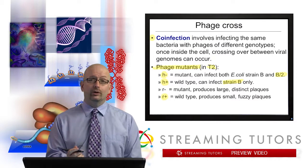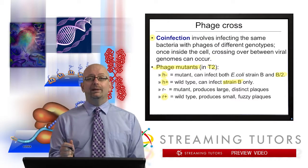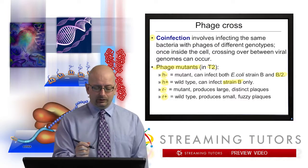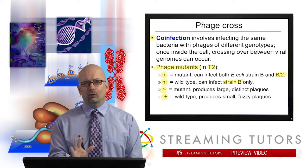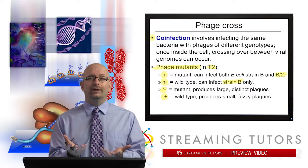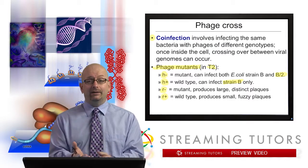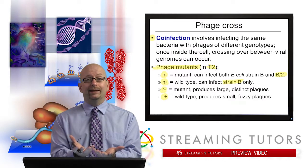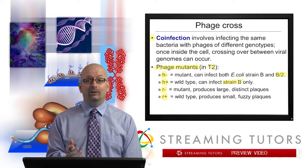R is another locus. The wild type for R produces small, fuzzy plaques, and R-minus is a mutant that produces large, distinct plaques. You don't have to worry about why for right now. The point is, while these are not traits like eye color, these are things you can detect when looking at bacterial growth — you can see which strain gets infected and you can see the type of plaque that comes about.